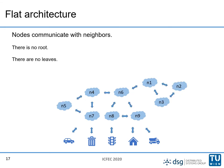On the other hand, in the flat architecture there is no root node and there are no leaves either, because any node can communicate with any other node without the restrictions that apply to the hierarchical architecture.